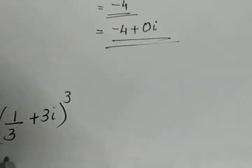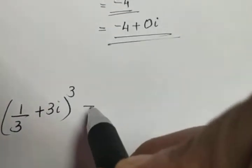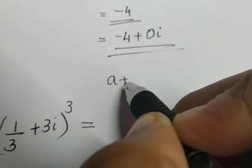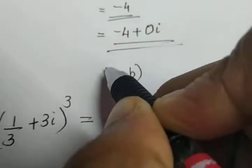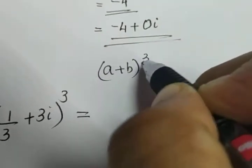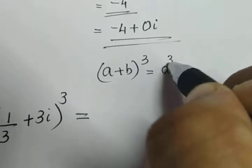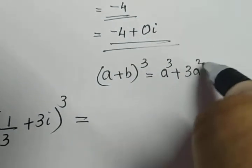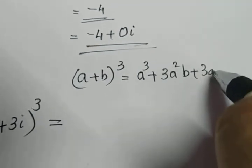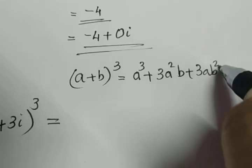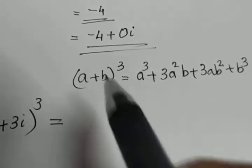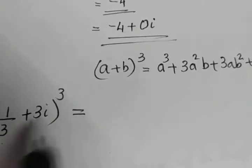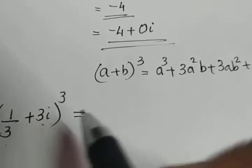1 by 3 plus 3i, the whole cube. It is of the form a plus b the whole cube. The expansion of a plus b the whole cube is a cubed plus 3a squared b plus 3ab squared plus b cubed. Here a is 1 by 3 and b is 3i.